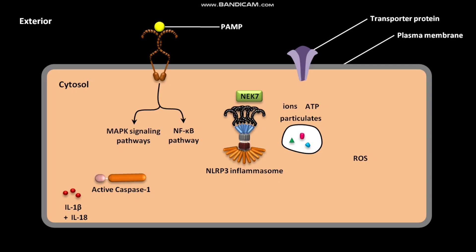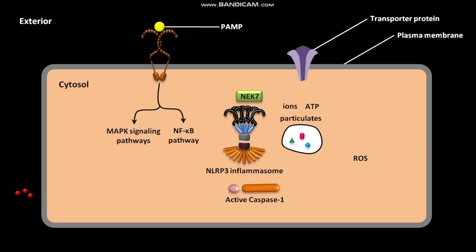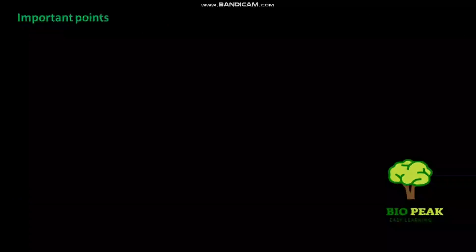IL-1β and IL-18 are then released into the exterior of the cell. Active Caspase-1 also catalyzes another biochemical reaction in which Gasdermin-D is converted into the N-terminal fragment of Gasdermin-D. This N-terminal fragment of Gasdermin-D induces the cell to undergo pyroptosis.